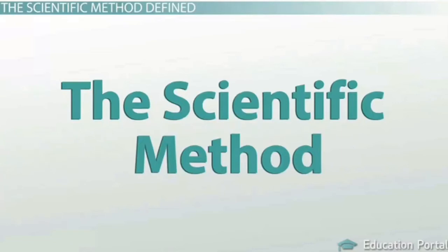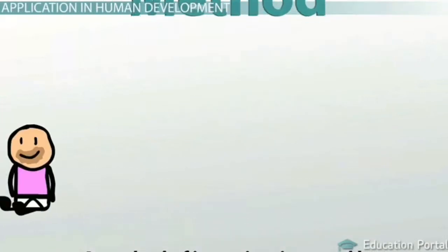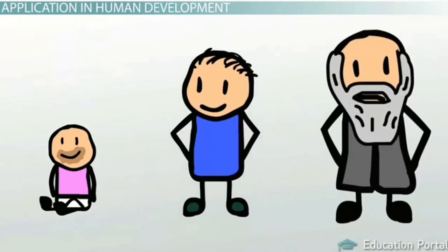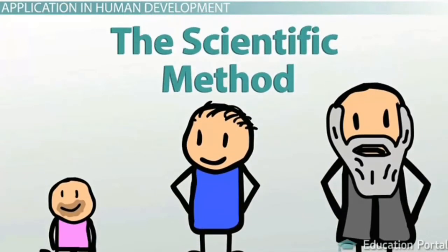The scientific method is a method of investigation used by researchers to identify a problem, observe associated variables, and collect data to reach conclusions about the problem. The goal of human development researchers is to understand, describe, and predict changes that can occur throughout a person's lifespan. They must utilize the scientific method to conduct this research in order to validate the assumptions that are being made.